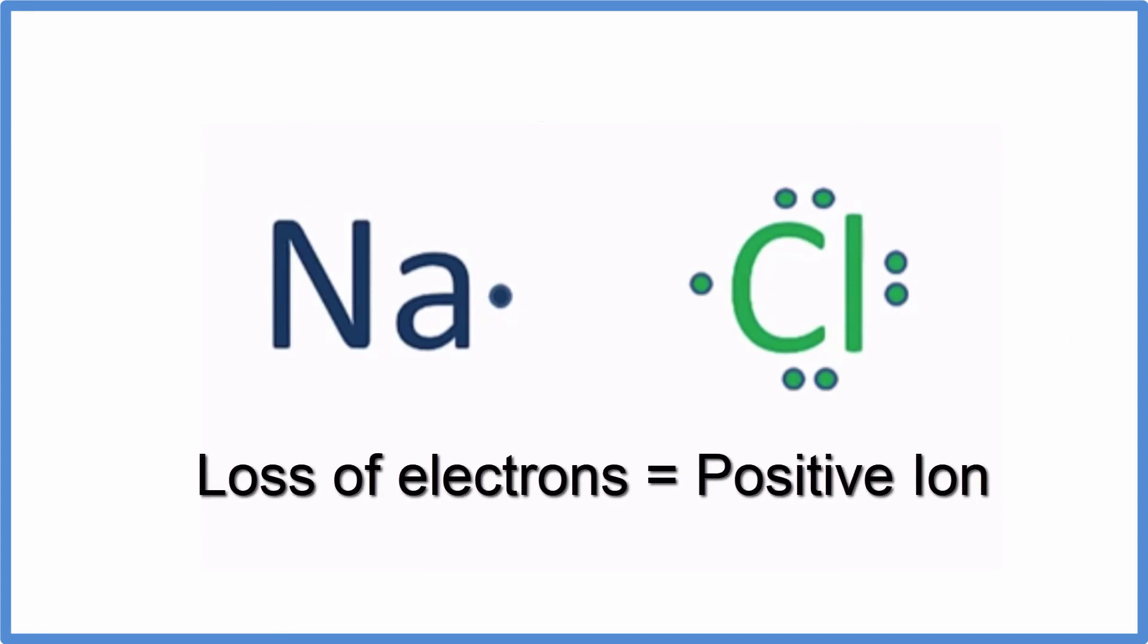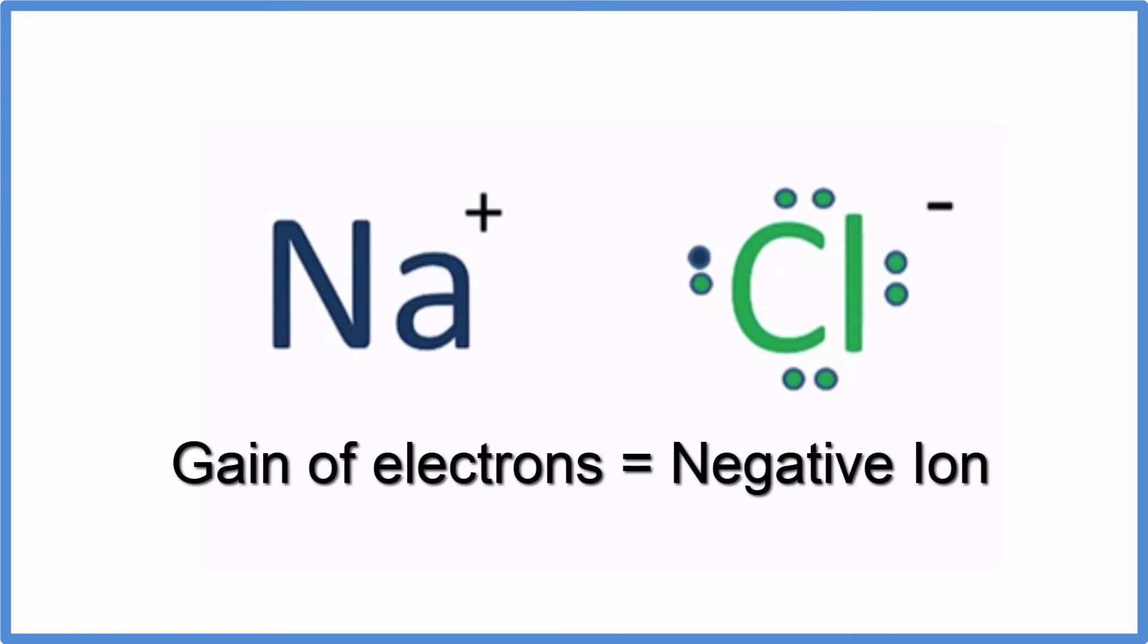It's important to understand that when an atom loses an electron, a negative charge, it becomes positive. The atom that receives that electron gets the negative charge and becomes a negative ion.